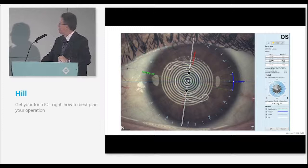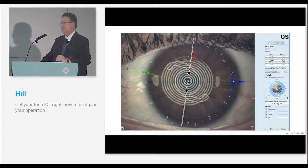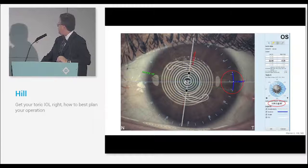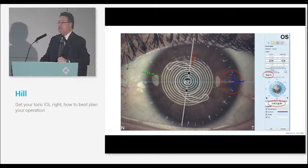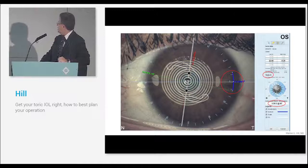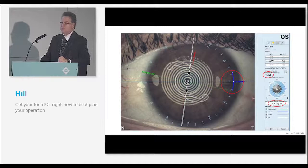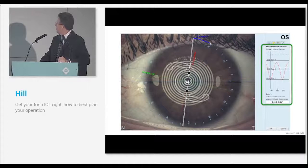These are some of the tools that we have on the software for planning for the toric IOL. Here we have our steep and flat meridians. You can play with the incision. Here we have just a temporal incision. It's showing that it's taking a T3 lens and we have 0.38 diopters of residual astigmatism. If we were to go to one of the tools and just change the location of the incision using this incision optimizer, it shows that if we go to 73 degrees, we now need a T2, a lower power lens, and the residual astigmatism is zero. So we have this incision optimizer, this outcomes optimizer that's on the LenStar, which is just wonderful.